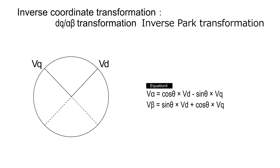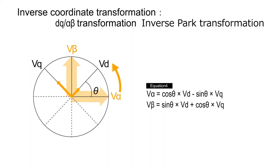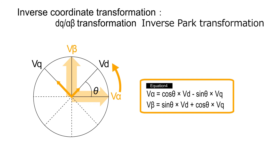Angle theta is an angle between the alpha-axis and d-axis. Voltage V-d of the magnetic component and voltage V-q of the torque component, calculated in current control, are transformed into stationary coordinates V-alpha and V-beta respectively. Since the rotor is rotating, theta changes every time coordinate transformation is performed. Let the voltages at rotational coordinates be V-d and V-q, and the voltages at stationary coordinates be V-alpha and V-beta. Then V-alpha and V-beta can be calculated using equation 4.